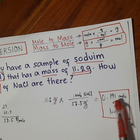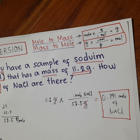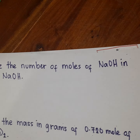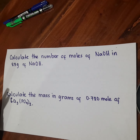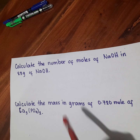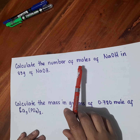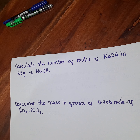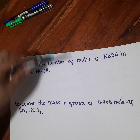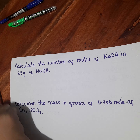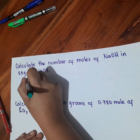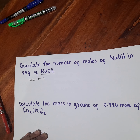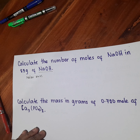The answer is 0.191 mole of sodium chloride. Now for another example. Calculate the number of moles of sodium hydroxide in 85 grams of sodium hydroxide. Again, the first thing that we need to do is to get the molar mass. So let's get the molar mass. The given compound is sodium hydroxide, NaOH.